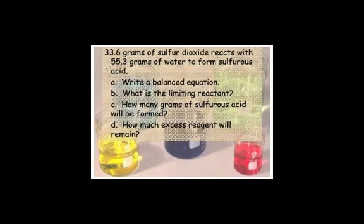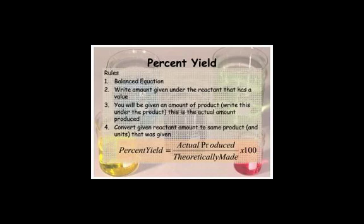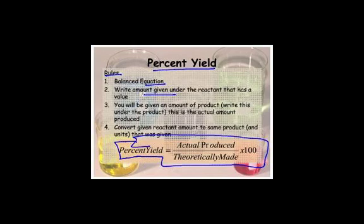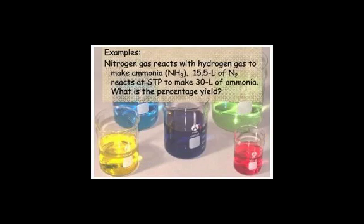I think in the interest of time, let's move to percent yield. Percent yield is a very simple problem. You can read these rules. Balanced equation, write the amount you've given. Sometimes you don't make as much as you expect to make, and then we have a percent yield. That's probably best if you look at these instructions, and we'll do an example.